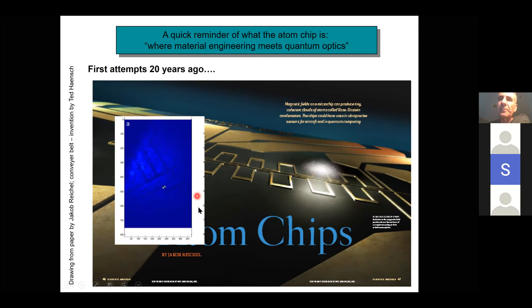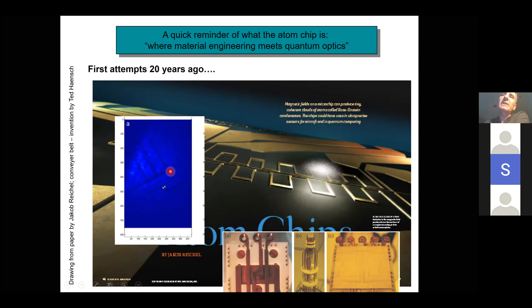In the lab this is how it looks — a real picture showing the wires and electrodes. You see here one image which is the real BEC and the other is just a reflection from the surface. The very small distance between these two clouds tells you how close you are to the surface.